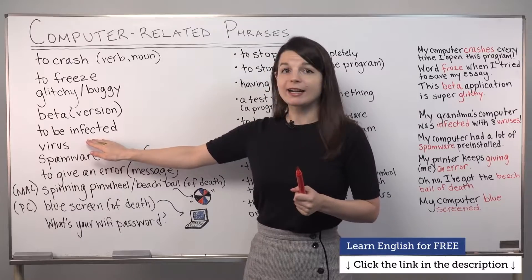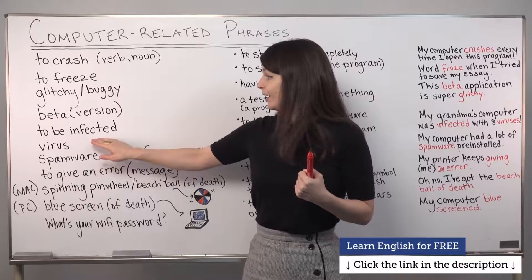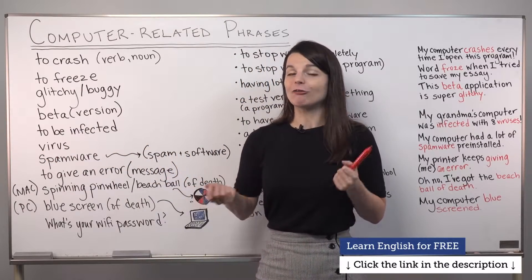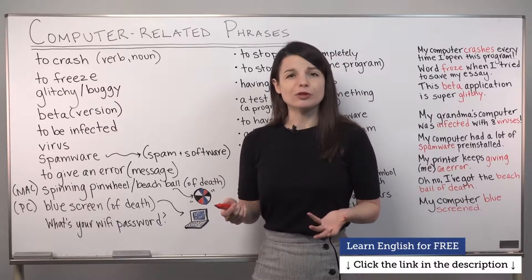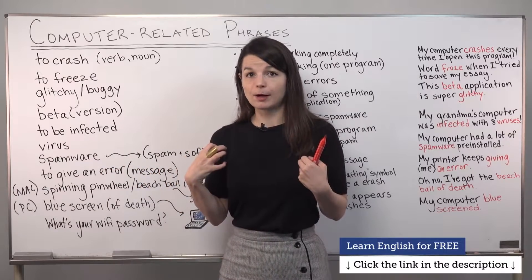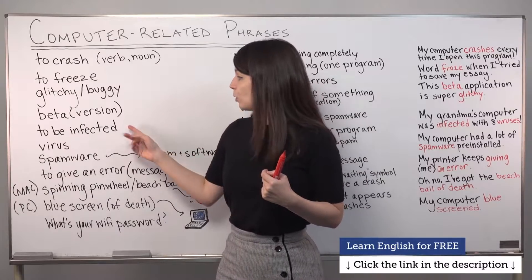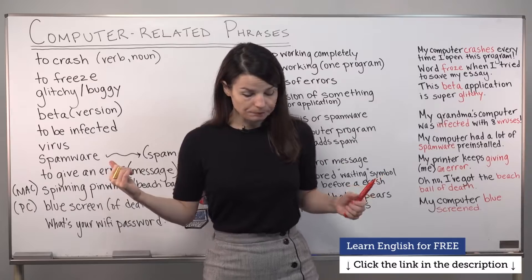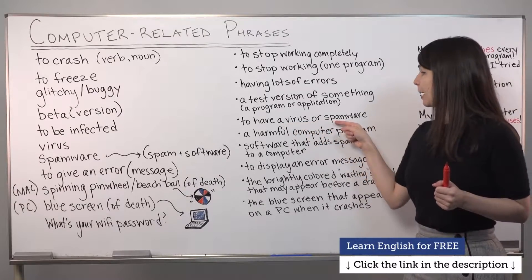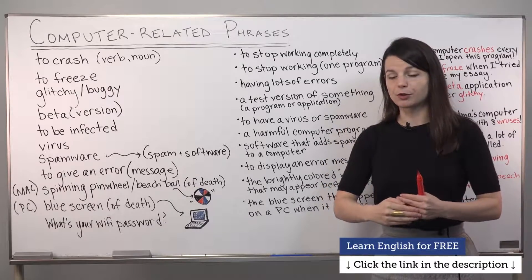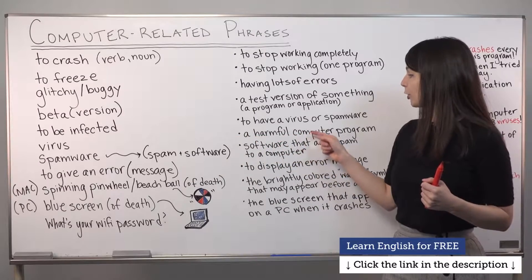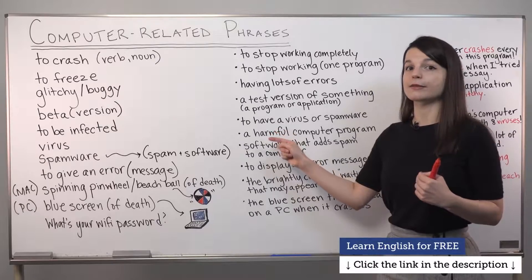Let's look at the next two together: 'to be infected' and 'virus.' A pronunciation point: the V-I sound is pronounced 'vi' — virus, a virus. Make sure to use a clear V sound, not a W sound. To be infected means to have a virus or spamware on your computer. A virus is a harmful computer program — harmful meaning dangerous or bad. It could install strange things on your computer, steal information, or spy on someone.